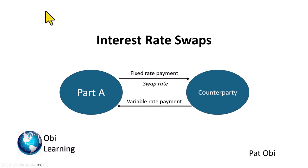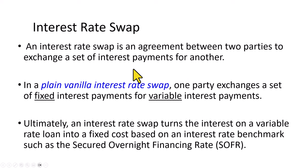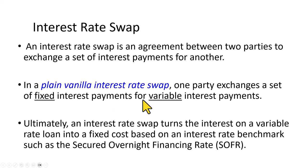This video explains the basics of interest rate swap, which is an agreement between two parties to exchange a set of interest payments for another. In what's called a plain vanilla interest rate swap, one party exchanges fixed interest payments for variable interest payments.